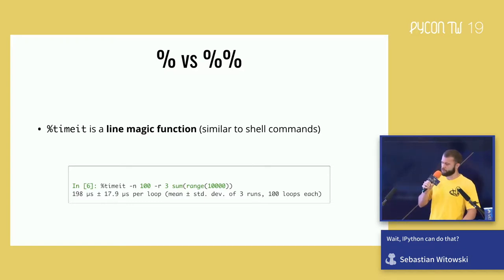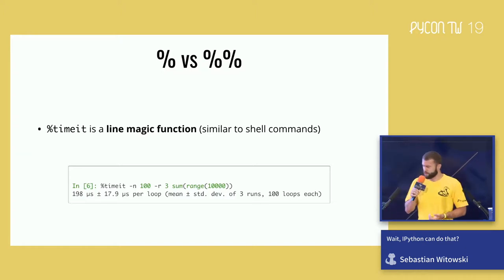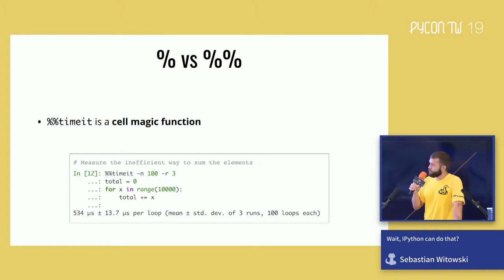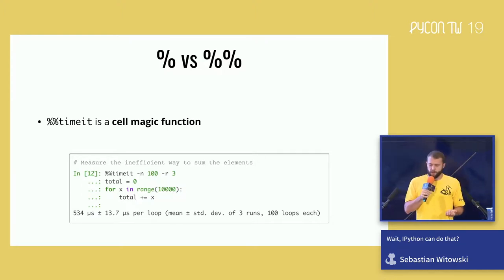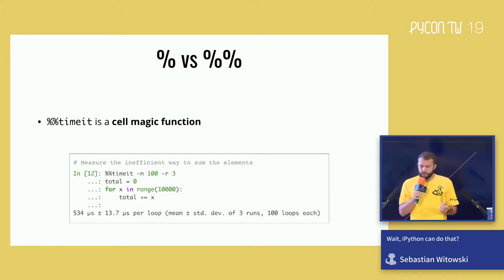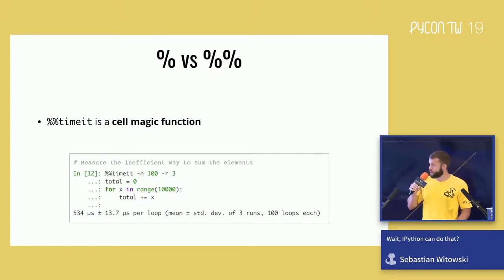There are two types of magic functions: line magics and cell magics. Line magic functions are similar to shell commands — they don't require parentheses when passing arguments. If a function starts with two percentage signs, it's a cell magic. Cell magics can accept multiple lines of input: you pass arguments right after the function name, press Enter, type the code you want the function to run on, and to let the cell magic know you're done and it should run, you press Enter twice.